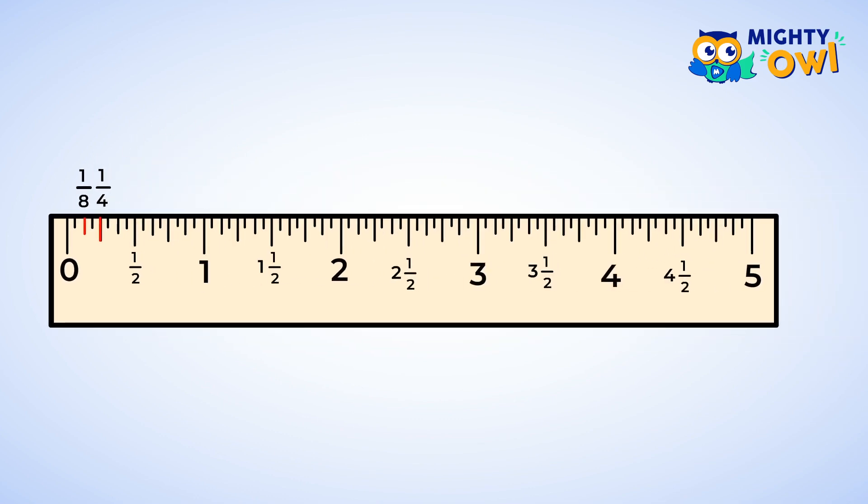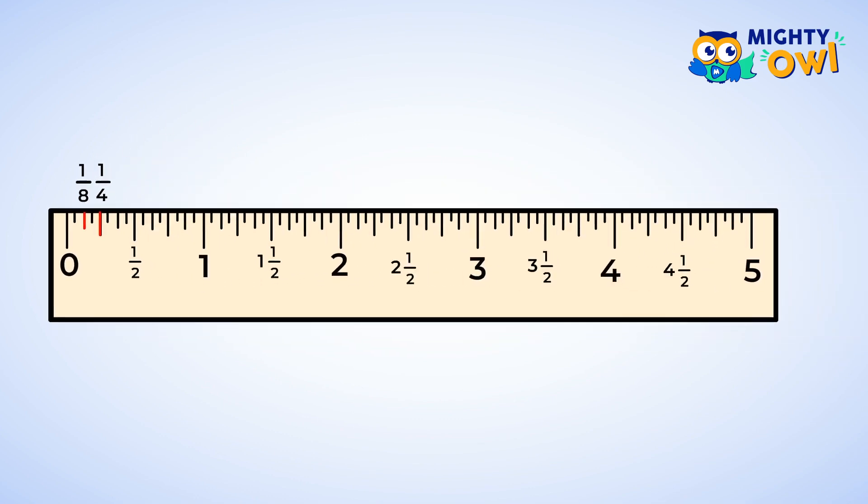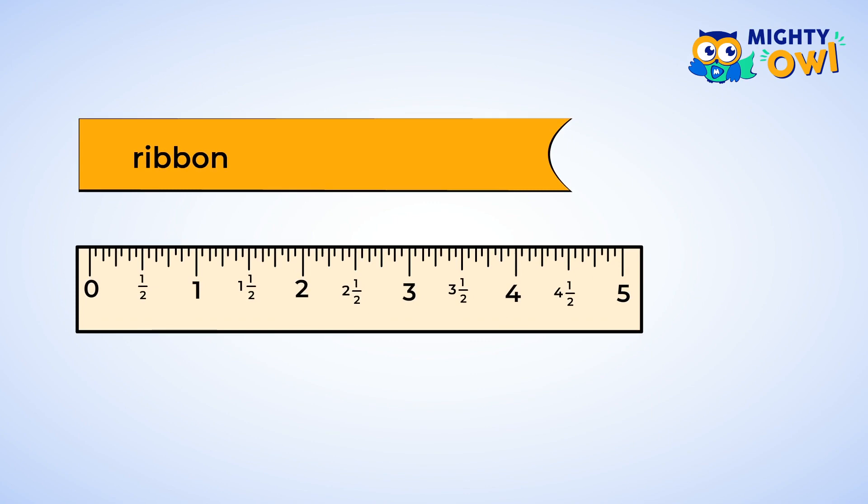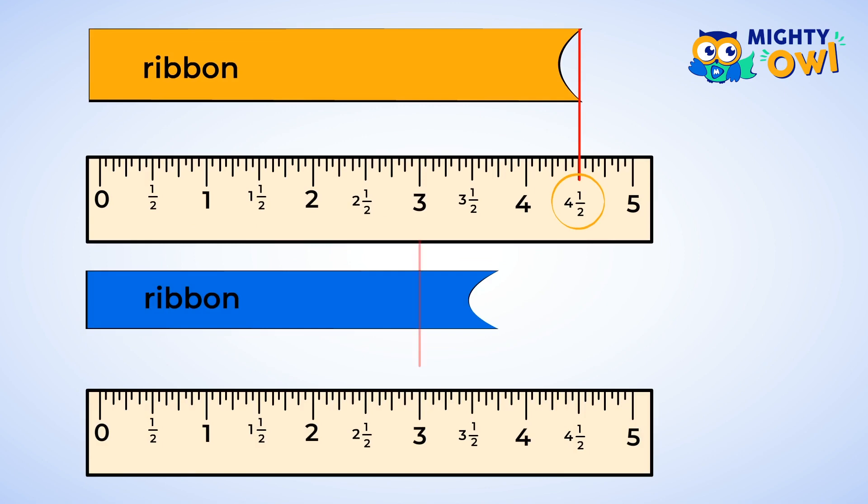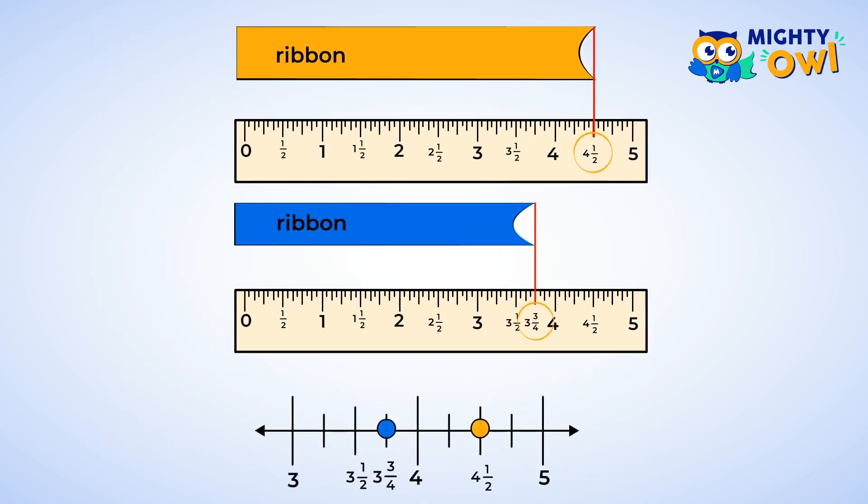And now that we can read the ruler, let's measure the ribbon. Okay, let's see here. The ribbon goes past the number four and stops at the marking for one-half. So, it looks like this piece of ribbon is four and a half inches long. Nice! Let's try another one. This ribbon goes past the three until it gets to three-fourths. And that means it has a length of three and three-fourths inches. Oh, I forgot. Let's put this information on the line plot before we lose track of it. So there's the first one, there's the second one.